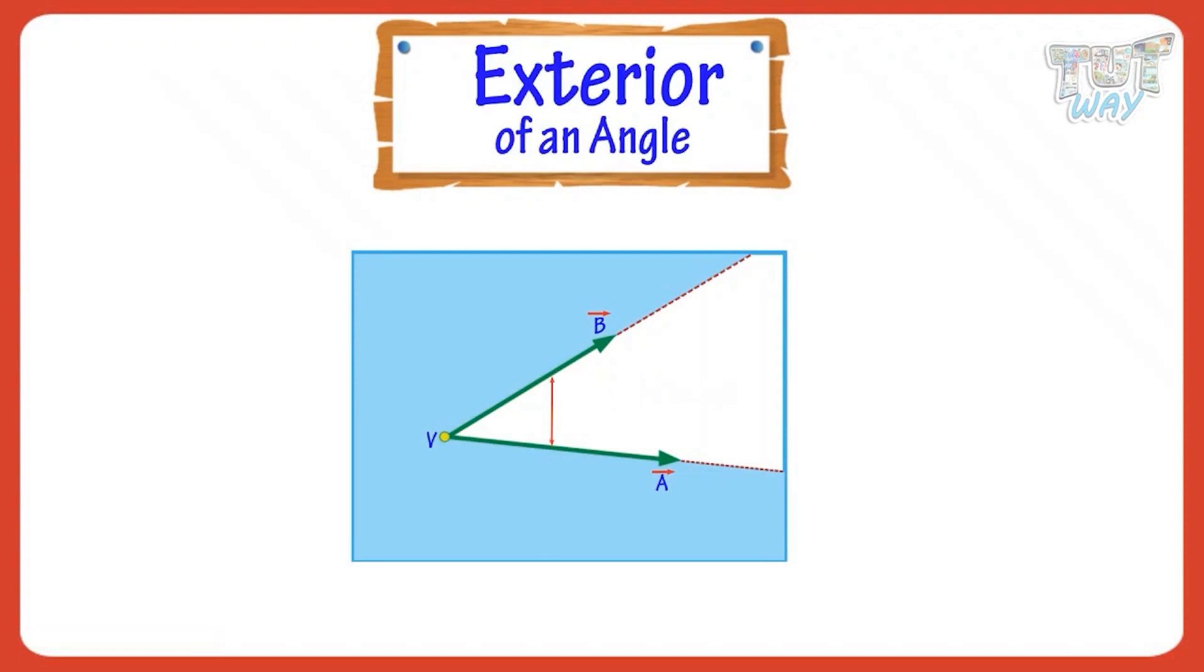Exterior: it is the space outside the two straight lines. It extends even beyond the ends of line segments. Here the area marked with blue is the exterior of the angle.